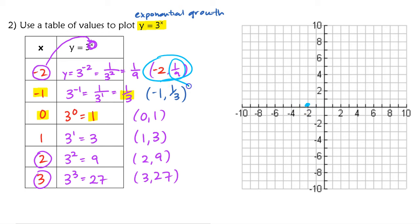Same thing for negative 1, 1 third. I can find negative 1 really easy on the x axis, but when I go up 1 third, I just have to kind of eyeball where that would be. My two first points here are a little bit difficult because of the fractions, but you're just estimating. From here on out, it's pretty easy to plot these points. 0, 1 would be right here. Then we have 1, 3, which would be right there.